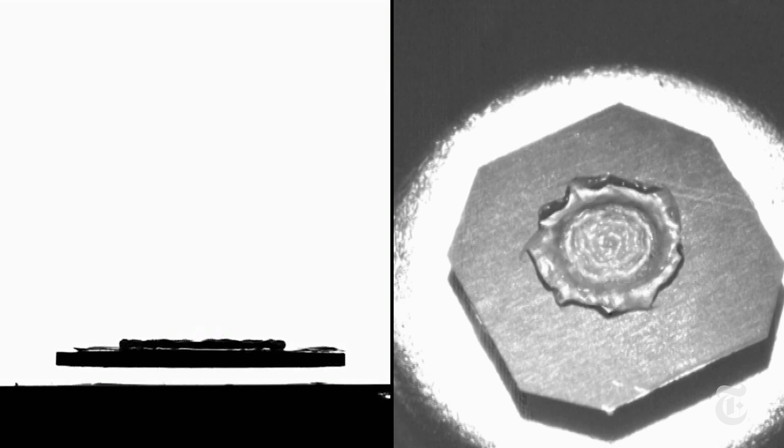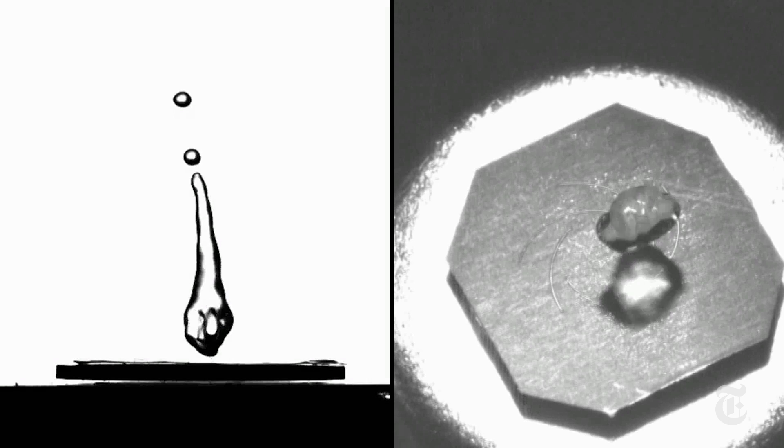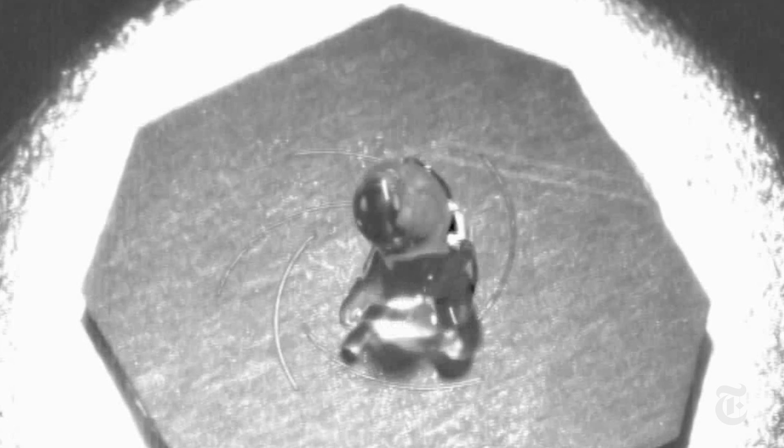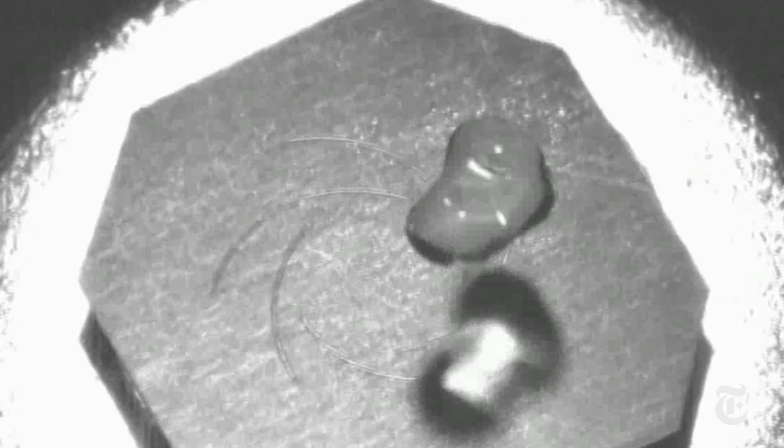Scientists also showed how the energy of the droplets could be harvested. They set up a magnetically suspended surface. As the droplet landed on the surface and rebounded, it pushed down the plate and caused it to spin. It's a new kind of hydropower.